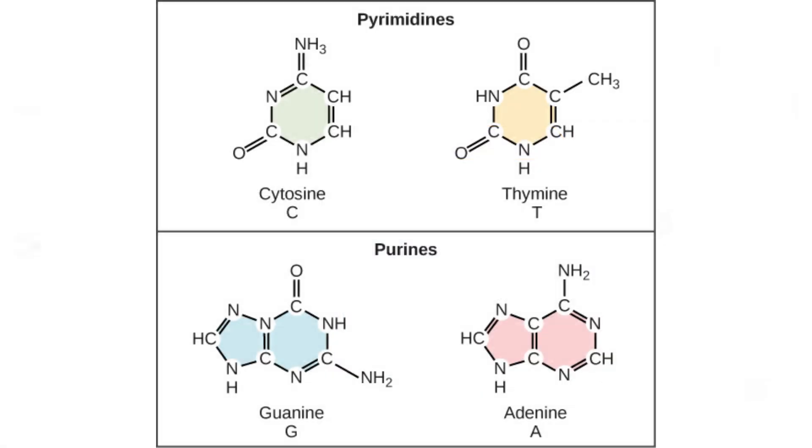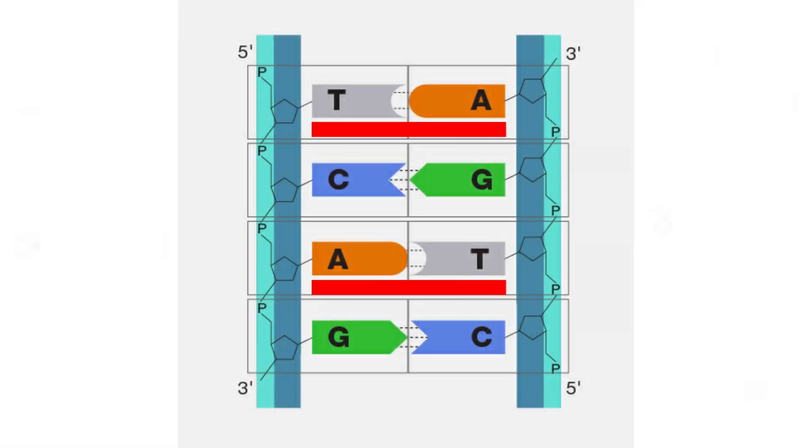There are four nitrogen bases always paired in a specific way. Adenine pairs with thymine. Cytosine pairs with guanine.